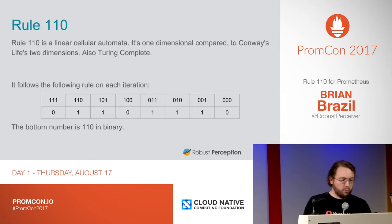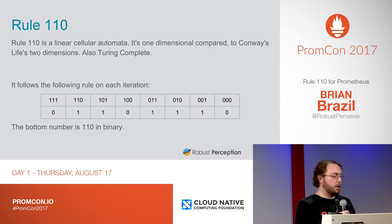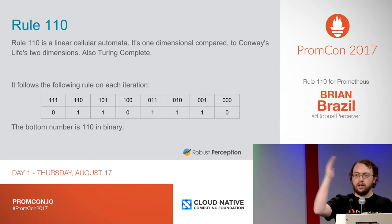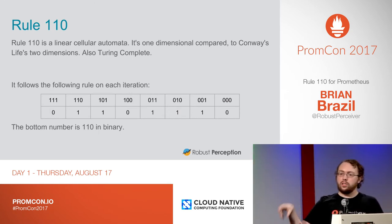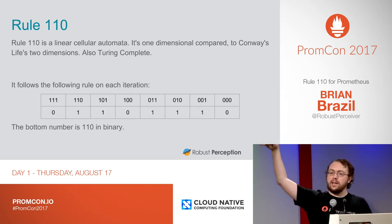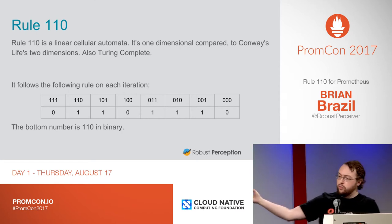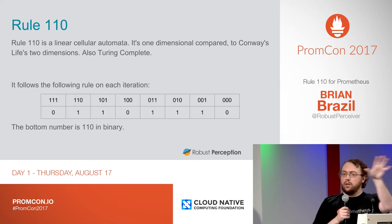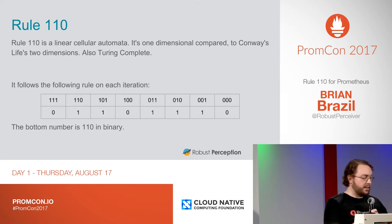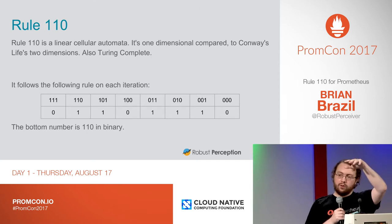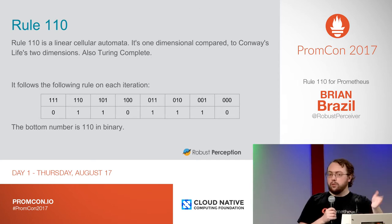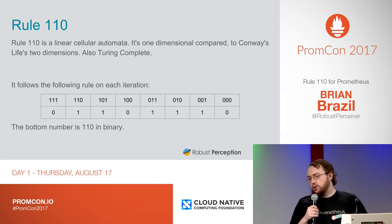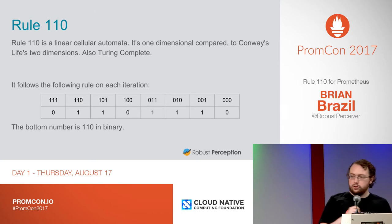So Rule 110 is a linear cellular automaton — it's one dimensional, whereas Life is two dimensional. So it's just line, line, line for viewing it, whereas you'd need a 3D structure to look at the evolution of Conway's Life. Here are the rules: if the cell above me and the ones to the left and right were all alive, I'll be dead. If the one above me and the one to the left were alive and the one to the right was dead, I'll be alive, and so on. If you look at the number in binary, it comes out as 110. There are other interesting rules, like 73.